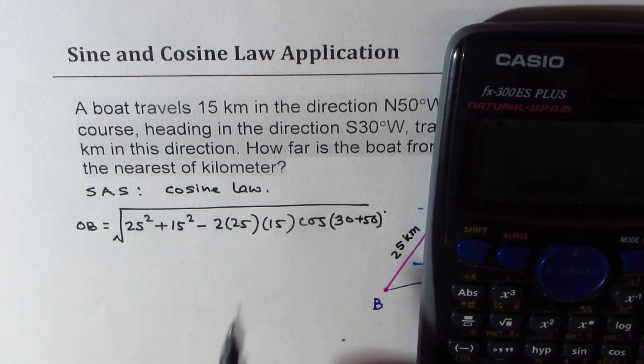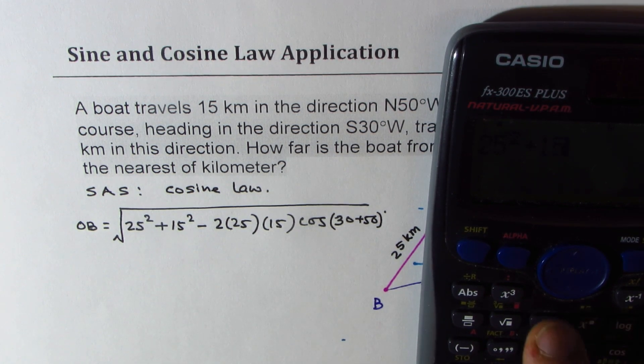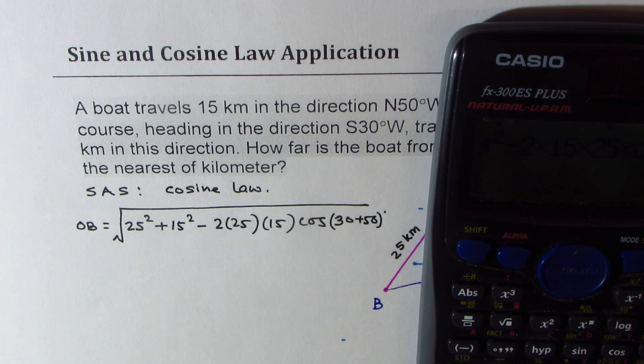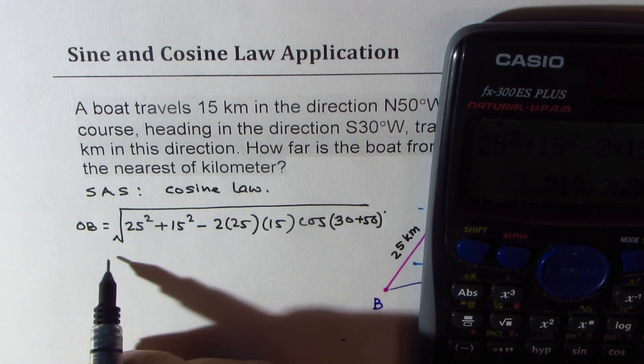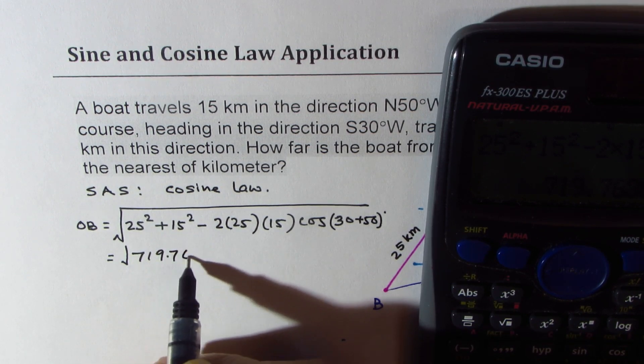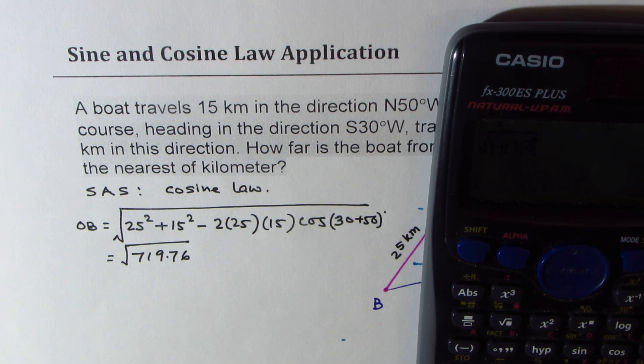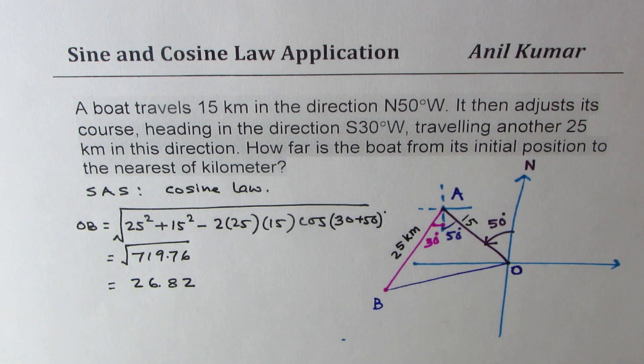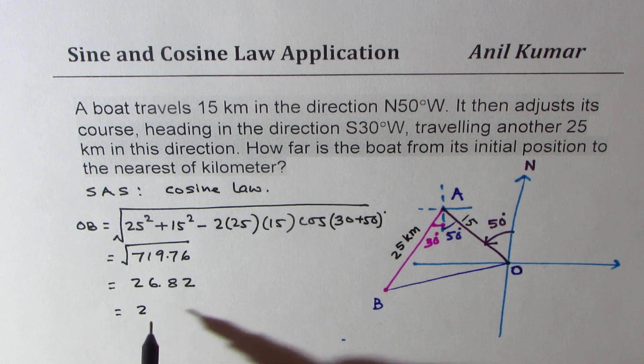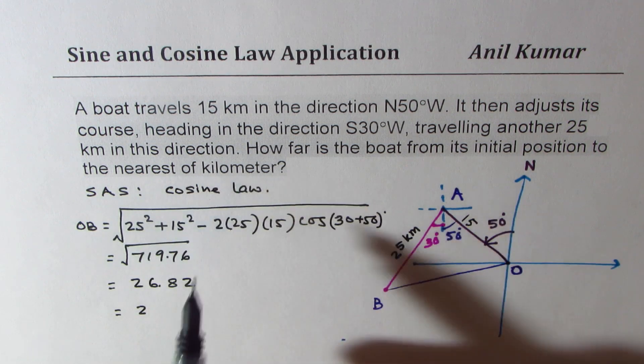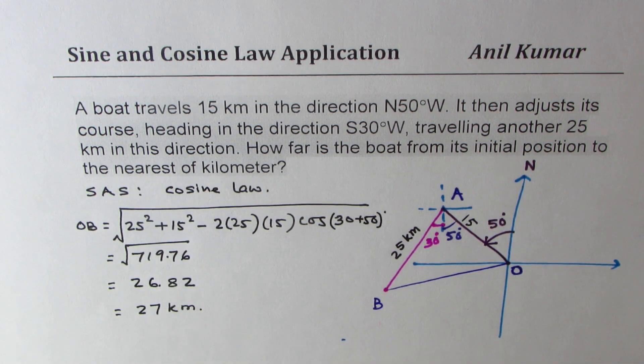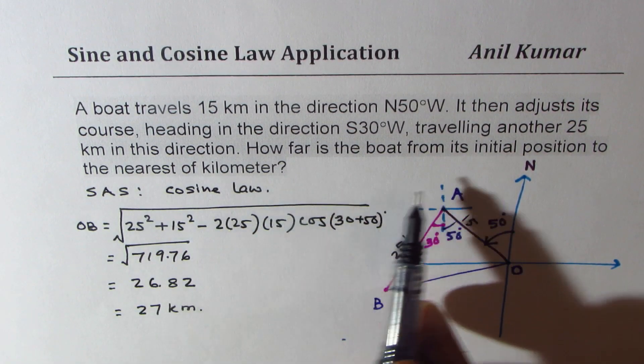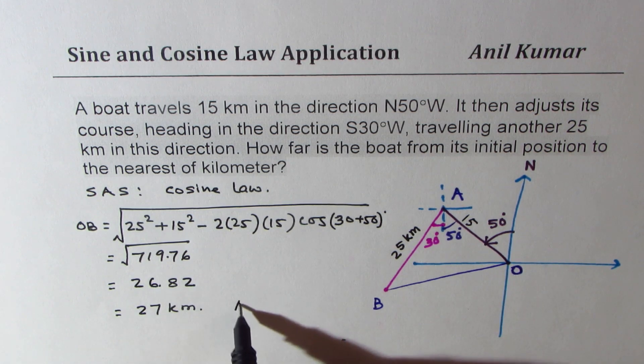We'll just find first inside term, which is 25 square plus 15 square minus 2 times 15 times 25 times cos of 30 plus 50. We get a value 719.76. Taking square root of our answer gives us the value of 26.82. We have to write to nearest kilometer, and therefore it is equal to 27 kilometers. So that is the distance of the boat from its starting point.